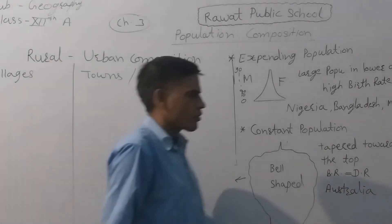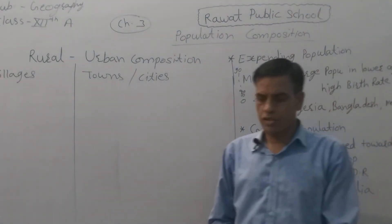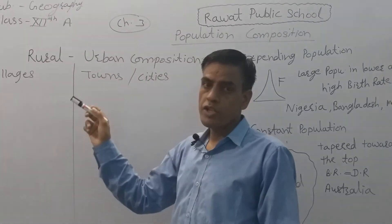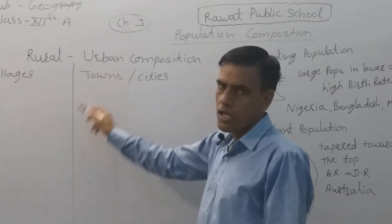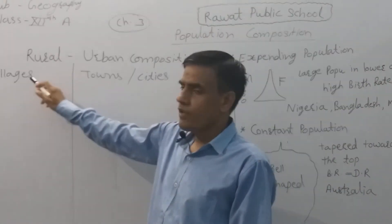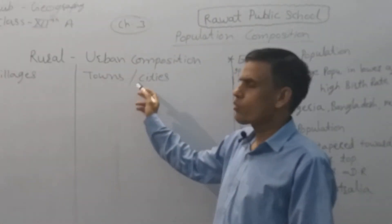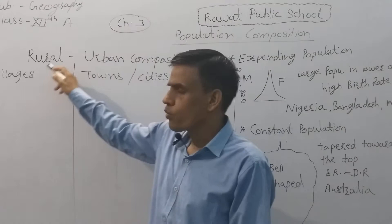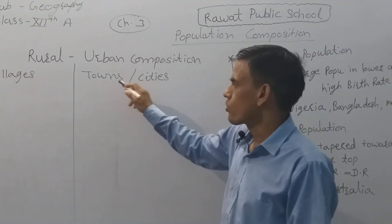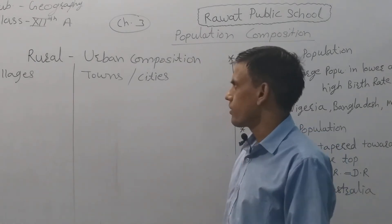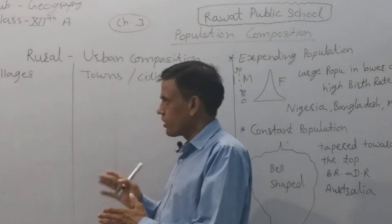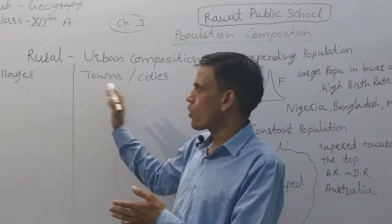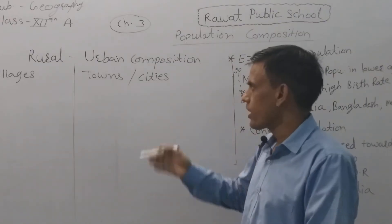On the basis of place of residence, the population composition is divided into two categories: rural composition and urban composition. Rural means villages or village areas, and urban means towns or city areas. The population that lives in villages or village areas is called the rural population, and those living in urban areas — towns and cities — is called the urban population. This categorization is based on the place of residence.